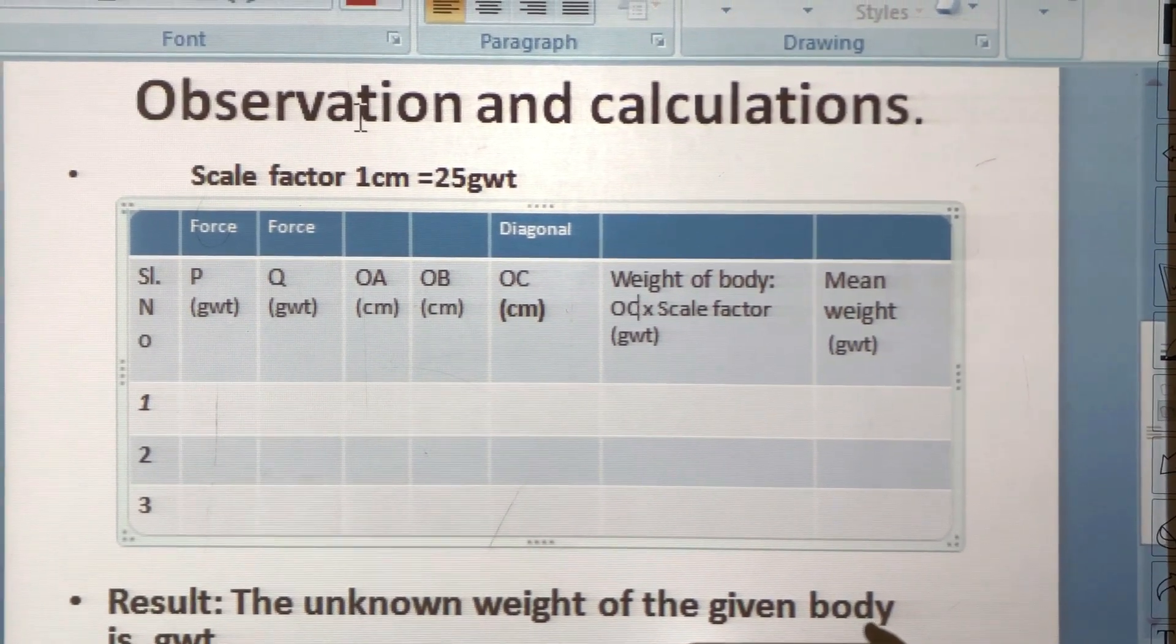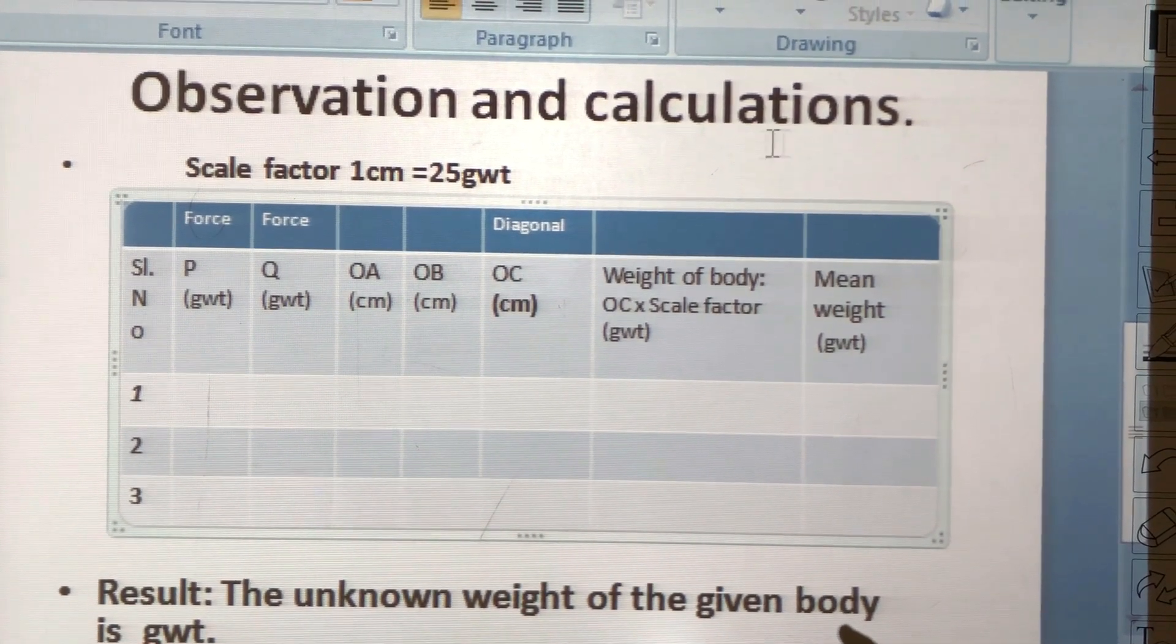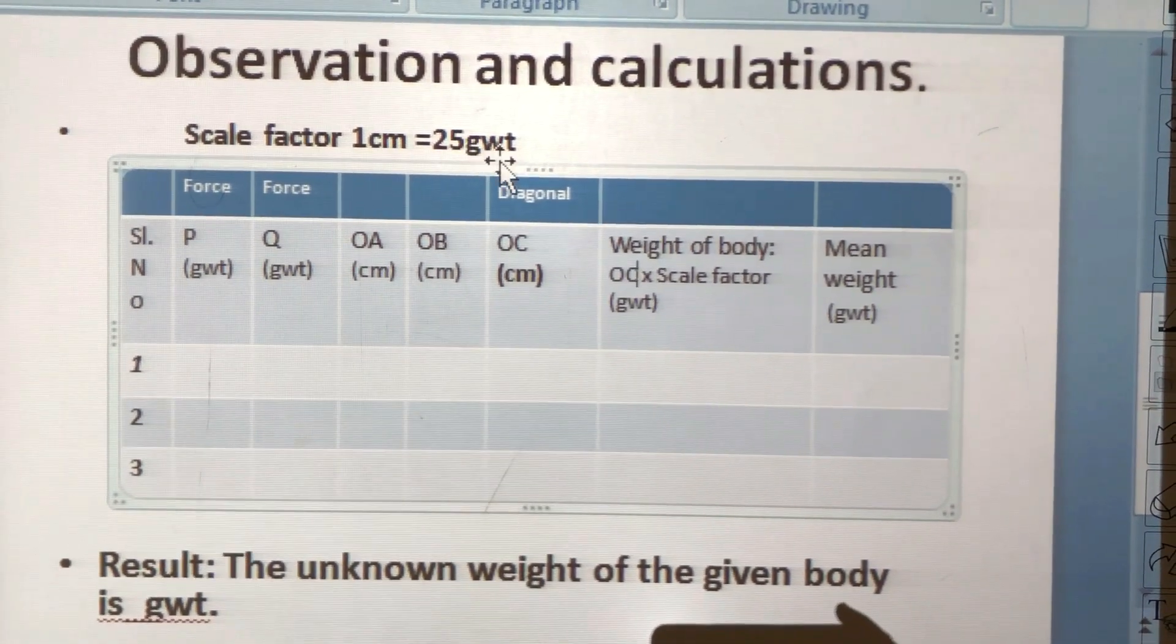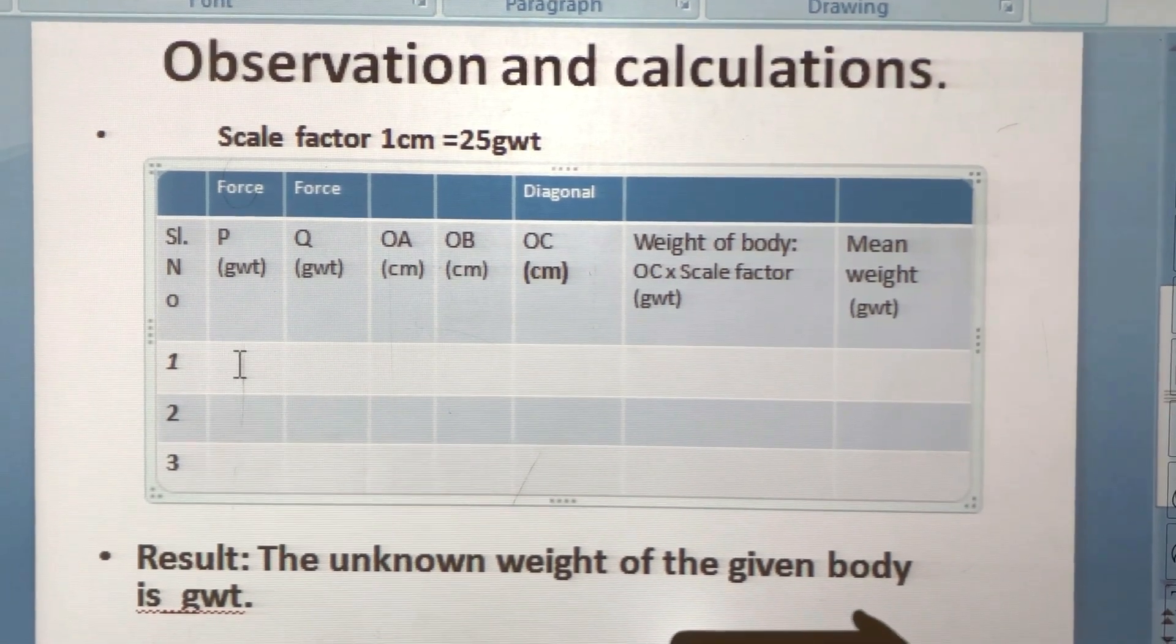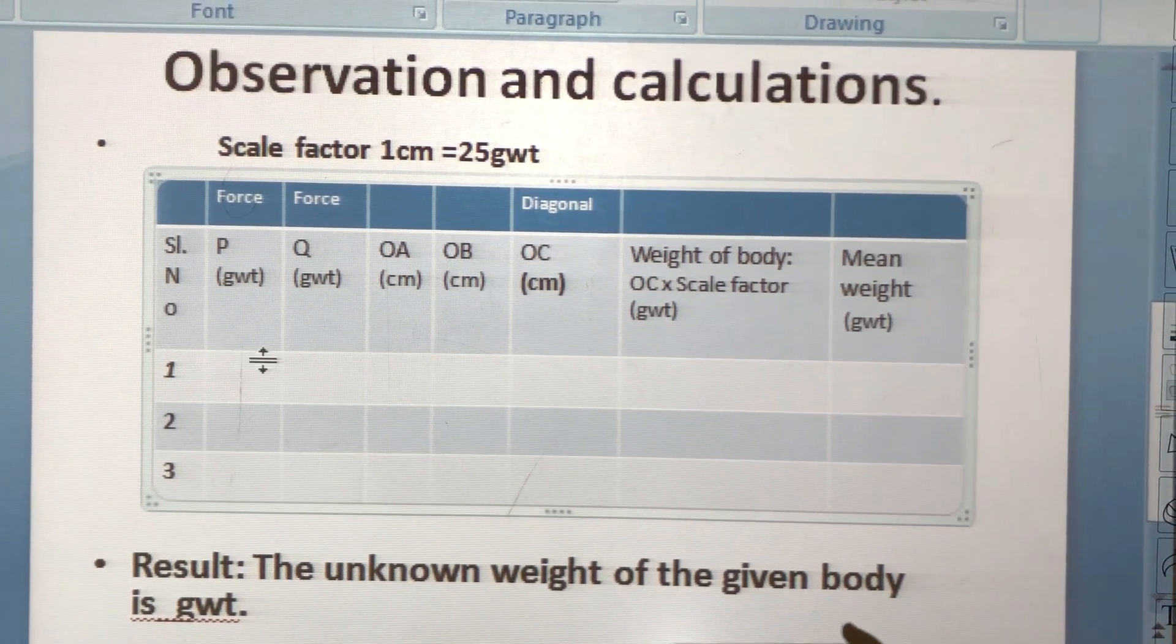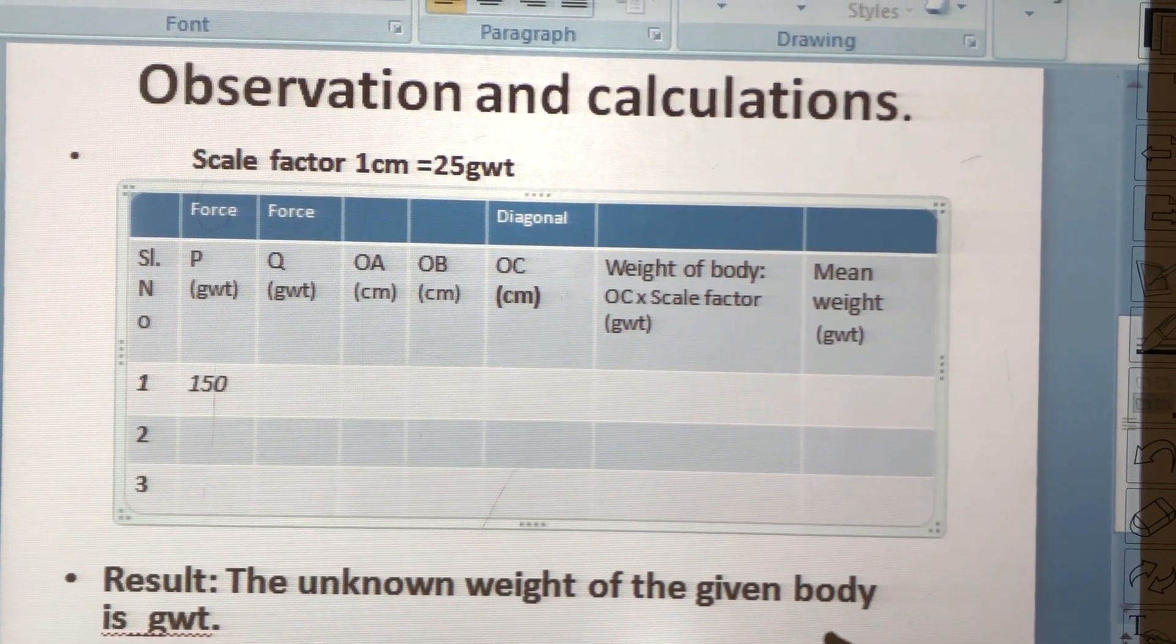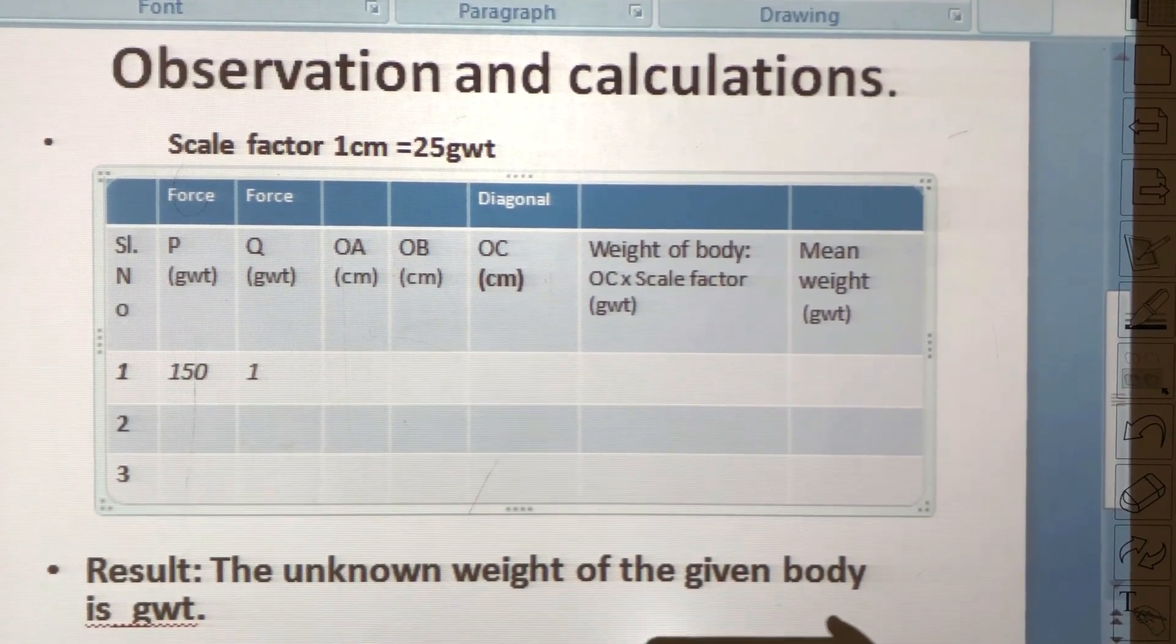So we can complete the observation and the calculation. The scale factor as we have decided is 1 centimeter is equal to 25 gram weight. The suspended weights over the two pulleys which represent P and Q, so we have seen that P was 150 gram weight, and similarly Q was also 150 gram weight.